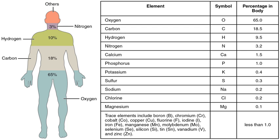The average 70 kg adult human body contains approximately 7 × 10^27 atoms and contains at least detectable traces of 60 chemical elements. About 29 of these elements are thought to play an active positive role in life and health in humans. The relative amounts of each element vary by individual, mainly due to differences in the proportion of fat, muscle and bone in their body.